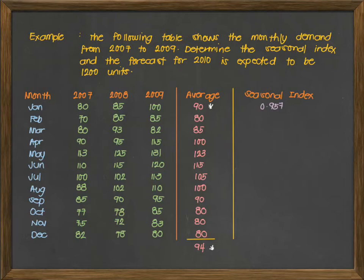Same step for February. We will be dividing 80 and 94. This will be 0.851. March will be 0.904. April is 1.064. And continuing until December, this will give us the following answers.